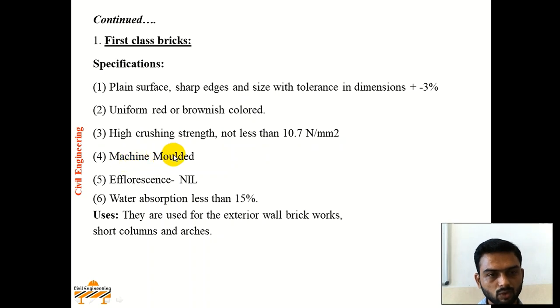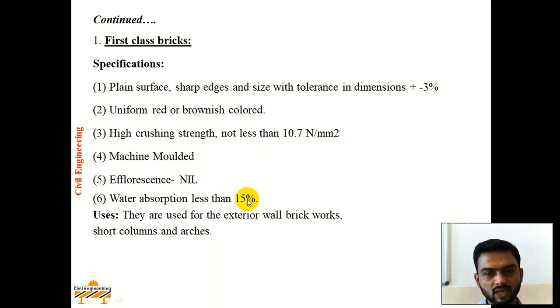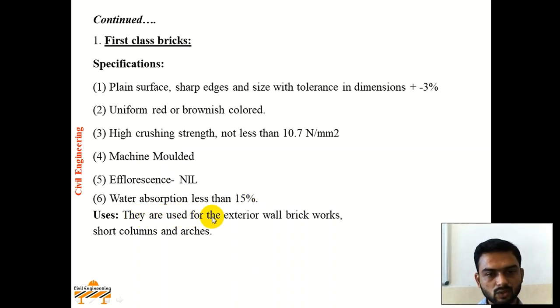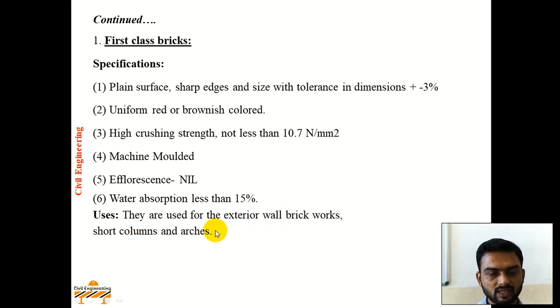1st-class bricks should be machine molded, efflorescence should be nil, and water absorption should be less than 15%. They are used for exterior brick walls, short columns, and arches.